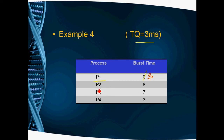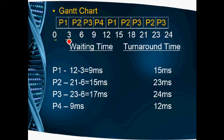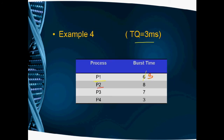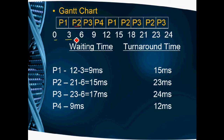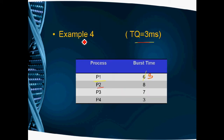In FCFS order, next we take P2. P2 execution starts at 3 milliseconds. P2's total burst time is 8, but only 3 milliseconds execute because the time quantum is 3. So from 3 to 6 milliseconds, P2 executes. After this, P2 has a remaining balance of 5 milliseconds.